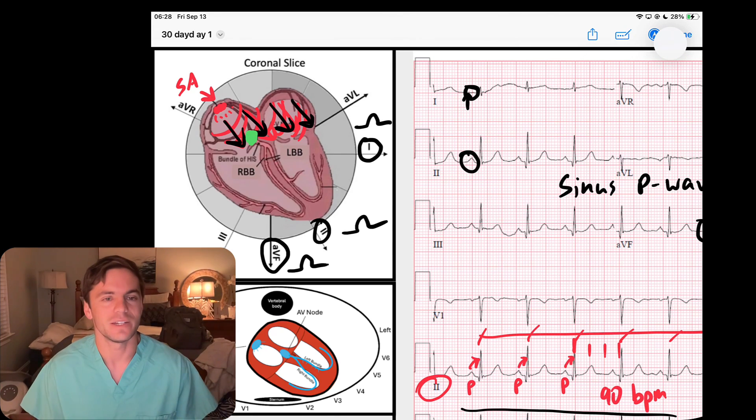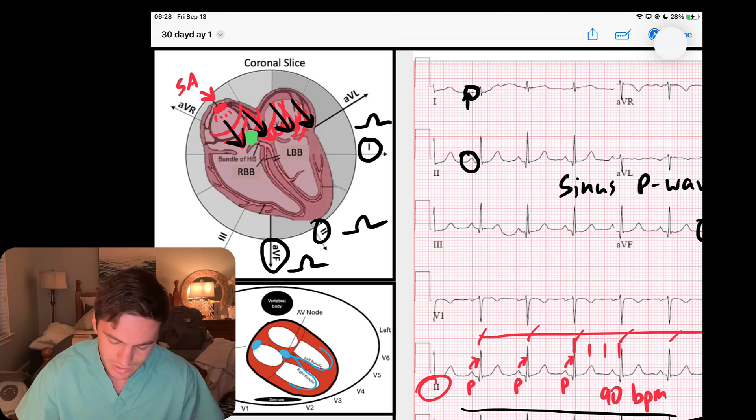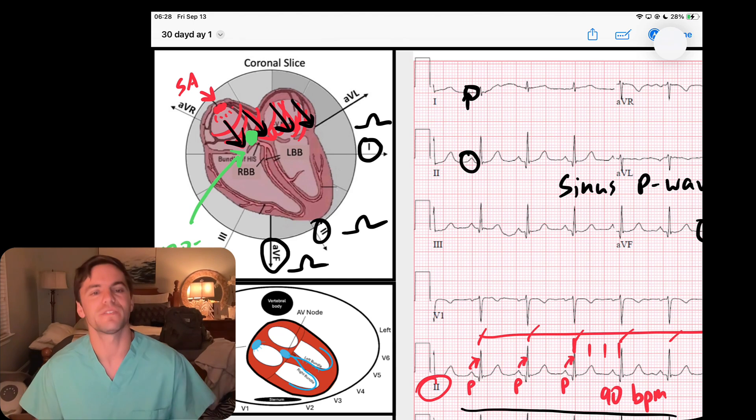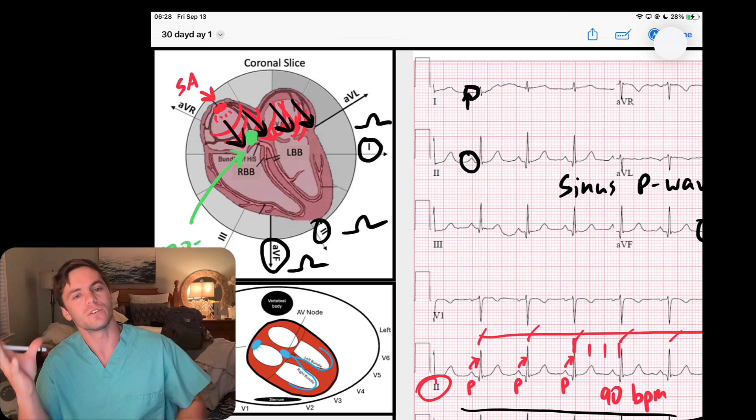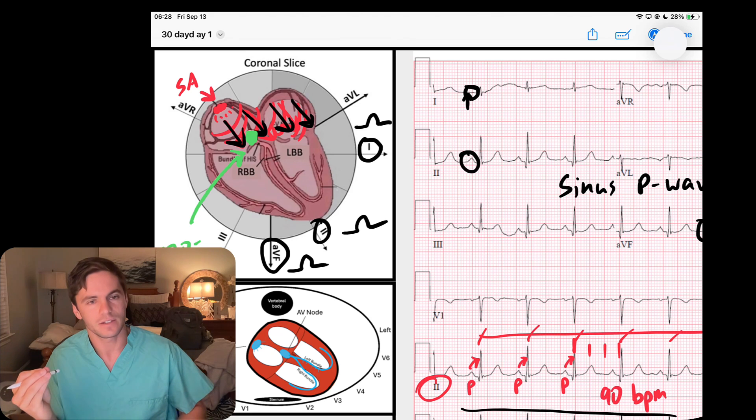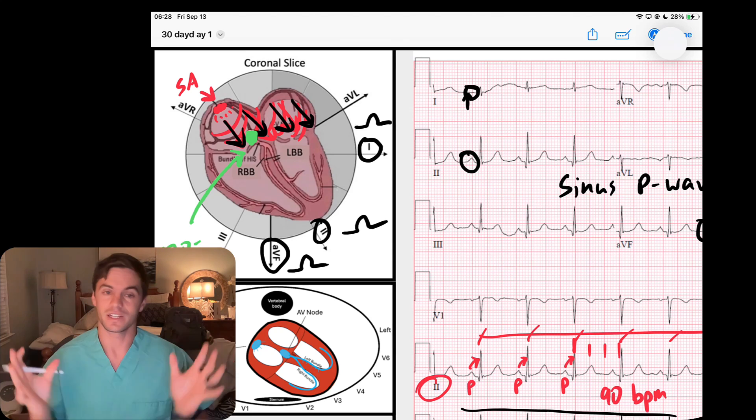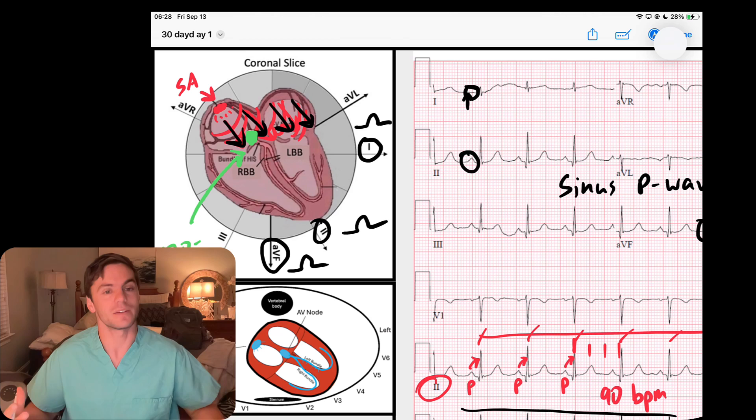The AV node sits right here. It captures all that signal and it's going to delay it. Remember, the AV node is going to delay this signal by 120 to 200 milliseconds—that's three to five small boxes on the EKG. That delay allows for the atria to contract, squeeze blood into the ventricles, and then the ventricles to fill completely.